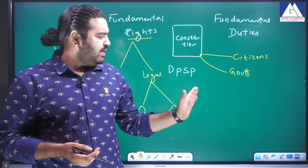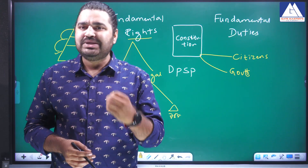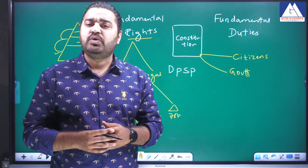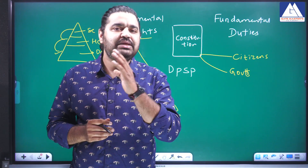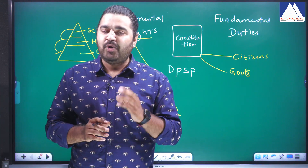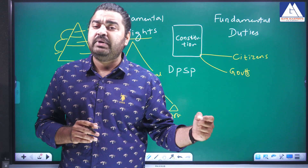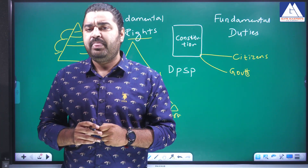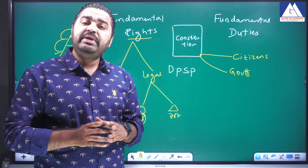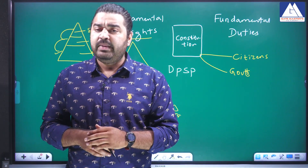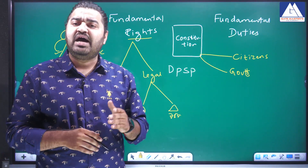DPSPs are not for individual citizens, but whoever is in power — whether it is the state government or central government — while framing any policy, they have to follow the instructions given by the constitution. DPSP stands for Directive Principles of State Policy. While framing any law or policy, the state — meaning the leaders, the lawmakers, whoever is in power — has to keep these directions in mind. The common theme in DPSP is welfare, which is why India is called a welfare state.